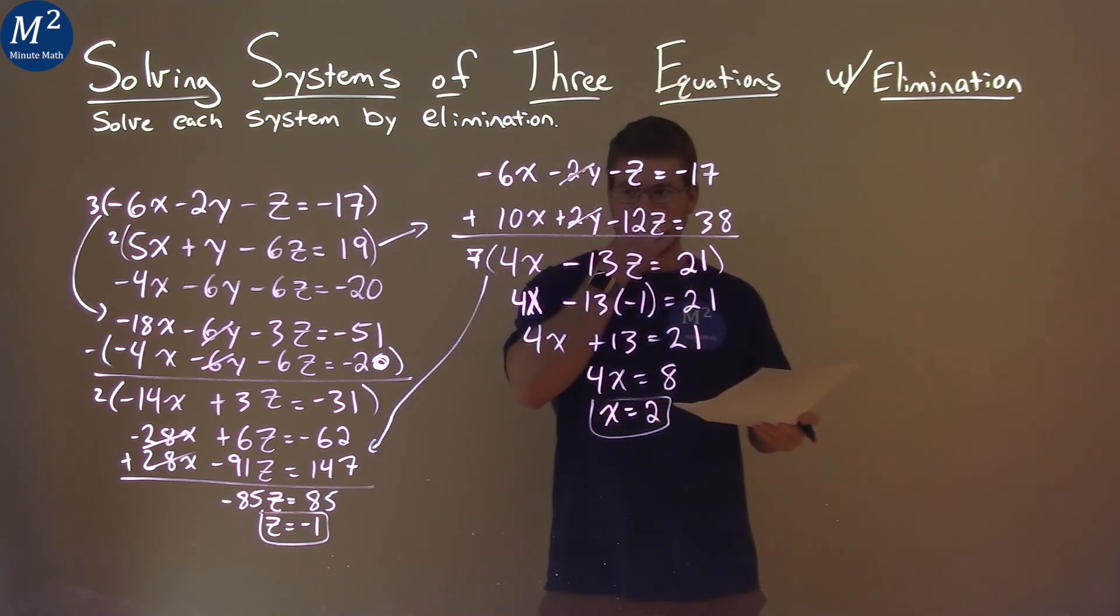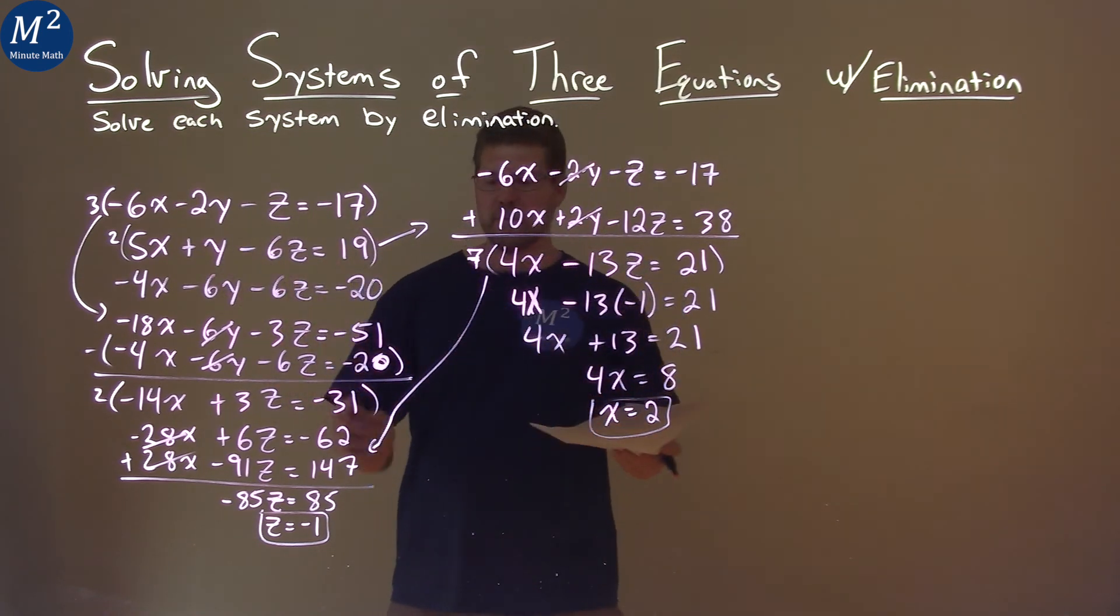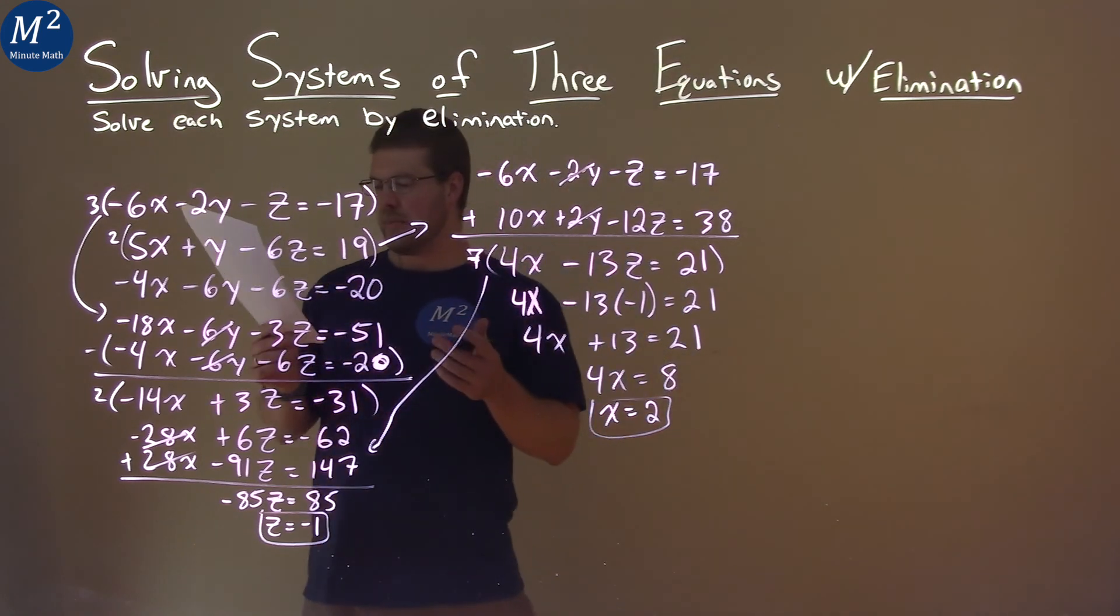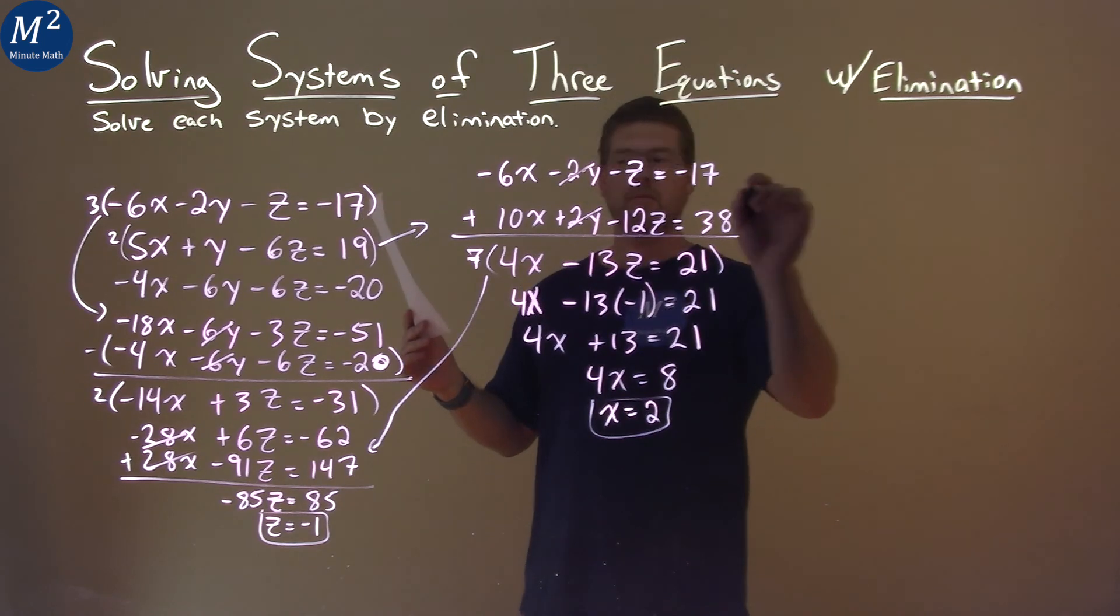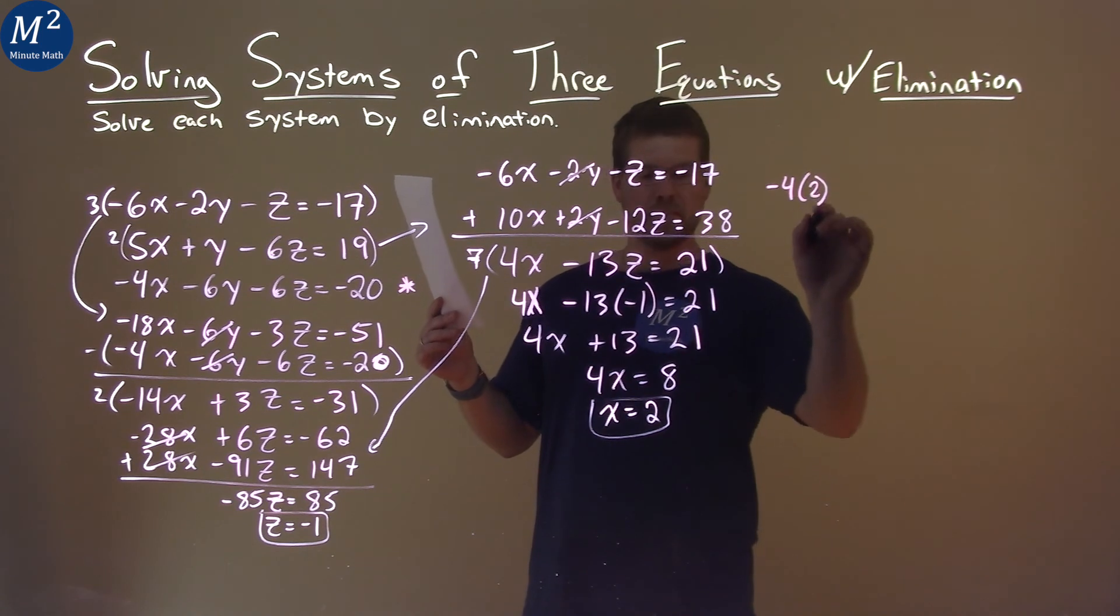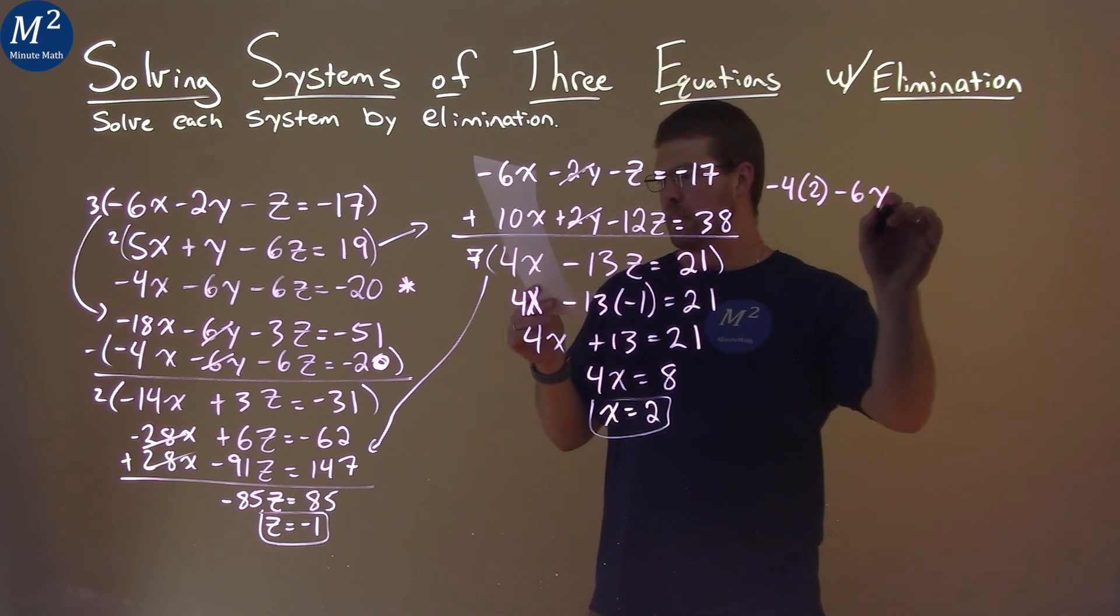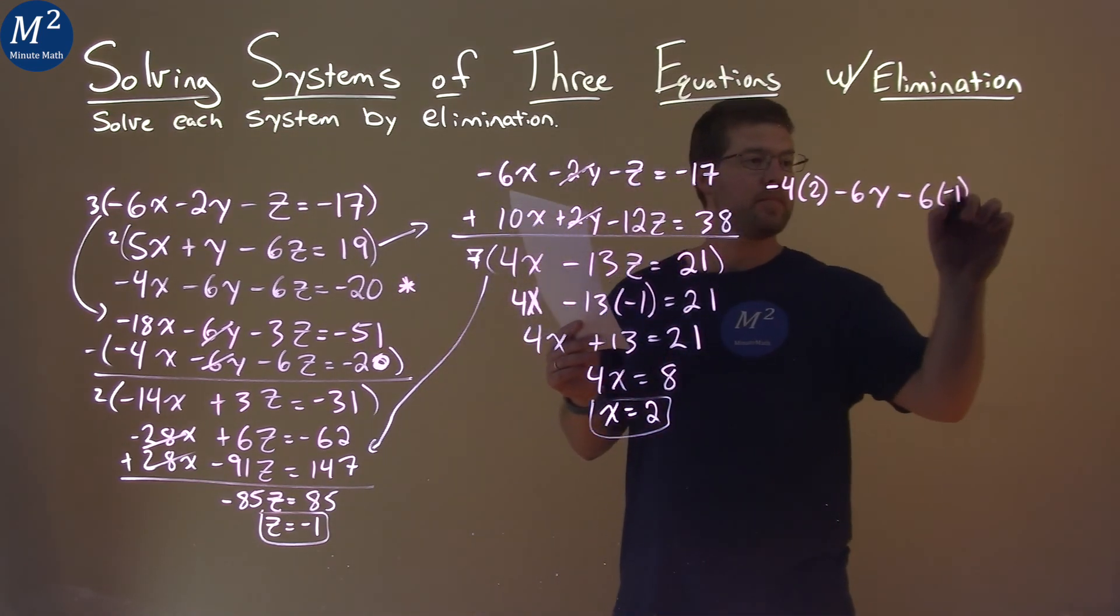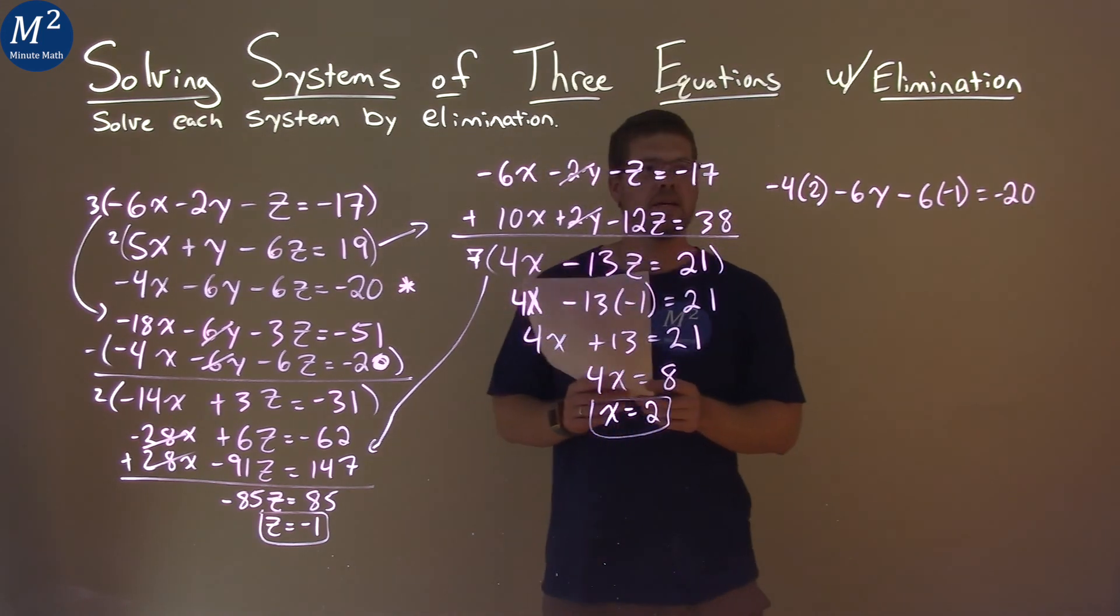So now we have our x value. Let's find our y value. We can pick any equation we want and plug these values in and solve for y. Find one that you might think is easy or how you're going to work with it. Let's just go with the last one here. We'll pick this one here. We have negative 4, and instead of x I put a 2, then we have minus 6y, minus 6, and then times z, which is negative 1, and it's equal to negative 20.